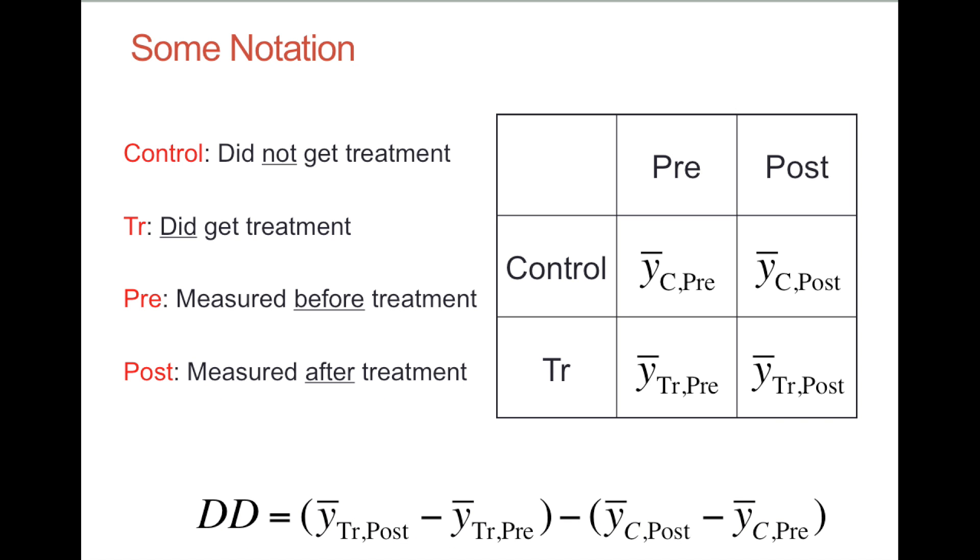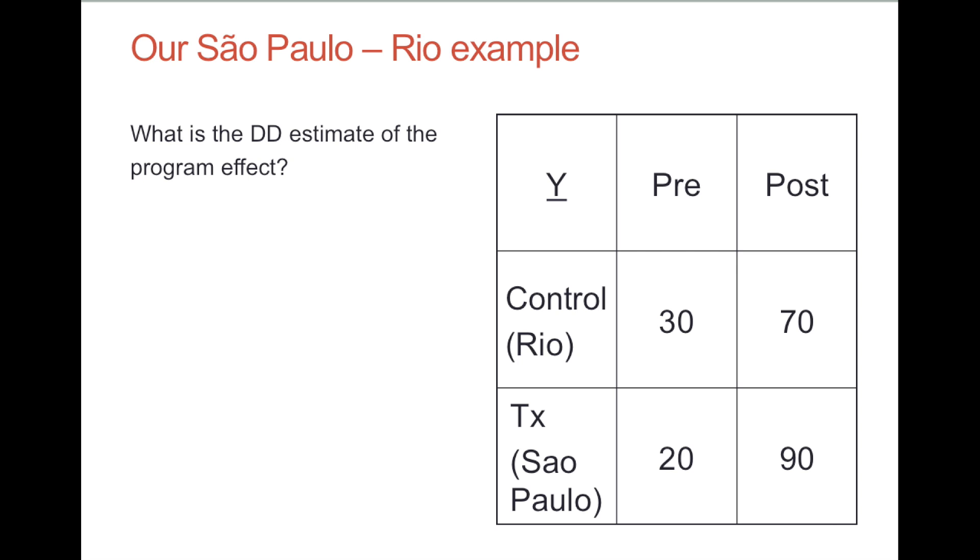As we've seen, the diff-in-diff estimate is straightforward. You start with the means of the four groups, you create the pre-post differences for treatment and control, and then difference them. To make sure you're getting the idea, I suggest pausing the video now and computing the diff-in-diff estimate for the hypothetical free lunch program using this hypothetical data.